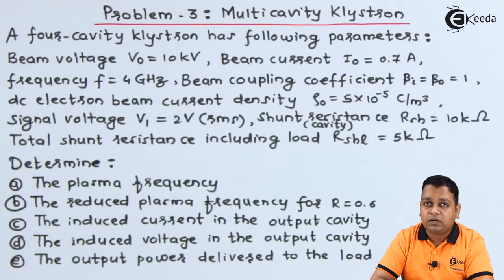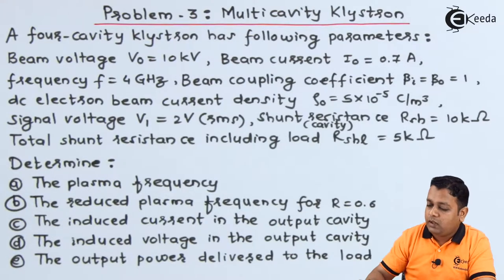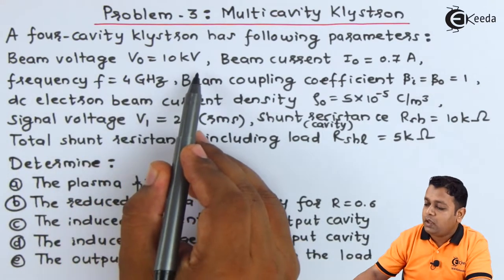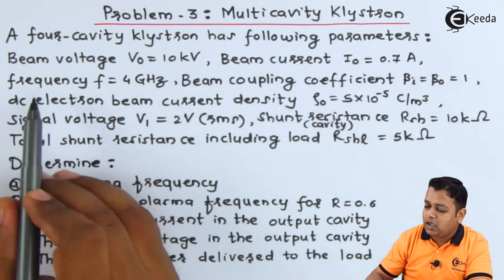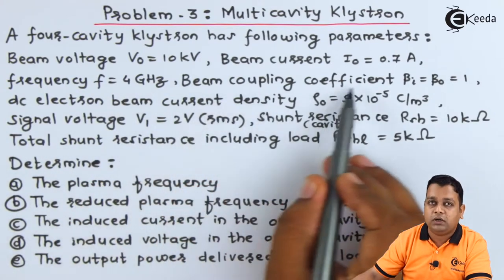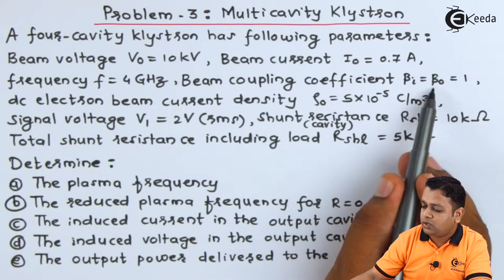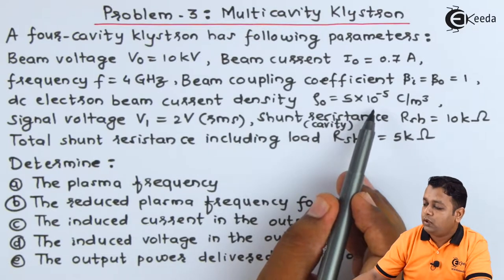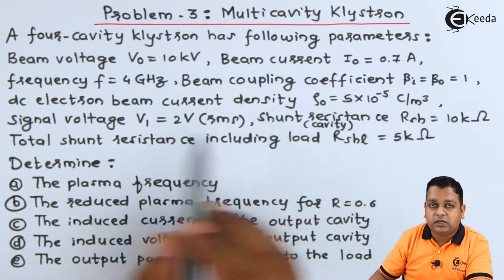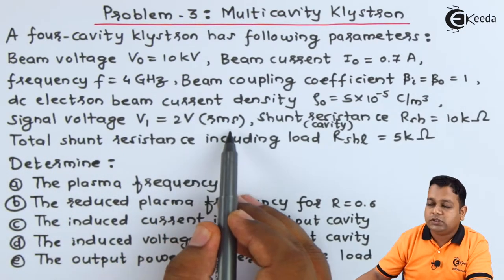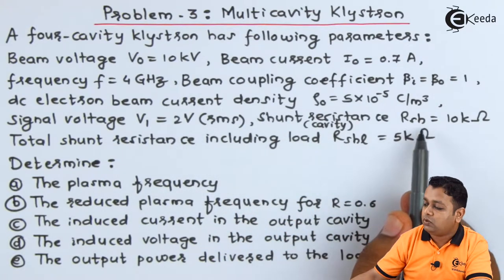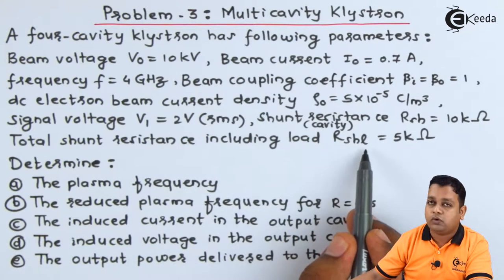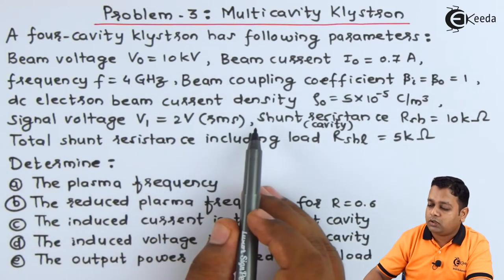For problem number 3 on multi-cavity klystron, the problem statement is: a 4-cavity klystron has the following parameters. Beam voltage V0 is equal to 10 kV. Beam current I0 is equal to 0.7 Amperes. Frequency F is equal to 4 GHz. Beam coupling coefficient β_i is equal to β_0 is equal to 1. DC electron beam current density ρ_0 is equal to 5×10⁻⁵ Coulombs per meter cube. Signal voltage V1 is equal to 2 volts RMS. Shunt resistance R_SH is equal to 10 kΩ. Total shunt resistance including the load R_SHL is equal to 5 kΩ.